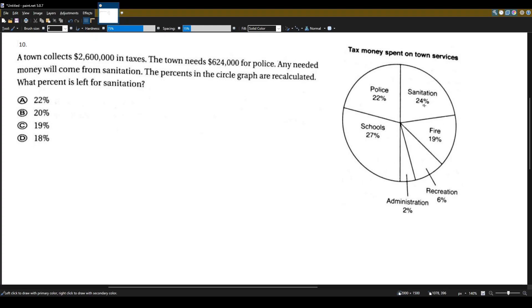So we want to figure out what the new percent of sanitation will be after we give the police $624,000 of the budget. So let's figure out how much percent is $624,000 out of the whole taxes, the $2.6 million. How much percent is this? Because figuring out how much percent this is will tell us how much percent the police will have.